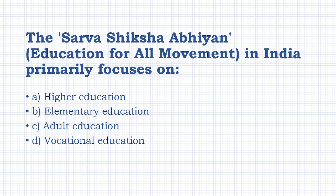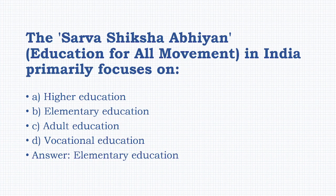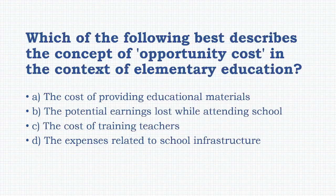The Sarva Shiksha Abhiyan (Education for All movement) in India primarily focuses on which level? Options: higher education, elementary education, adult education, vocational education. The answer is: elementary education.